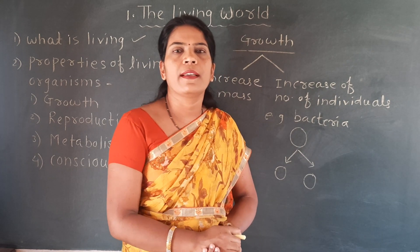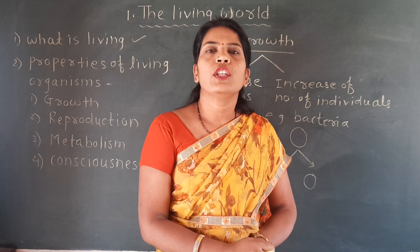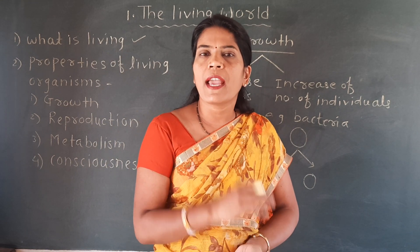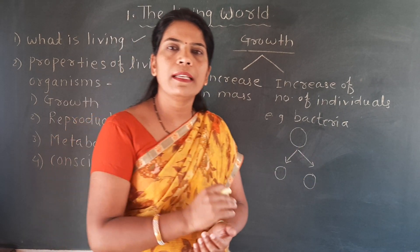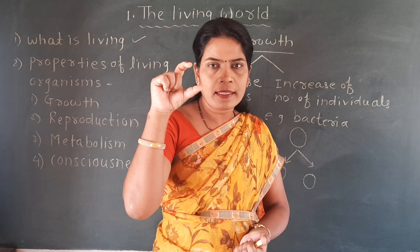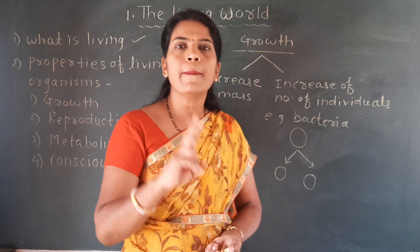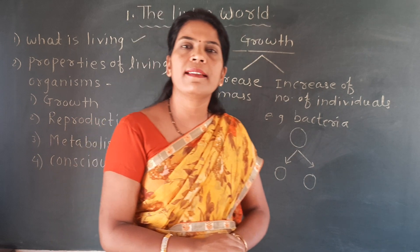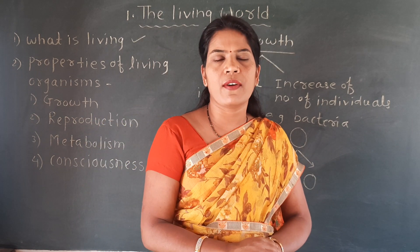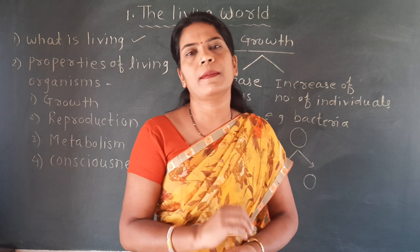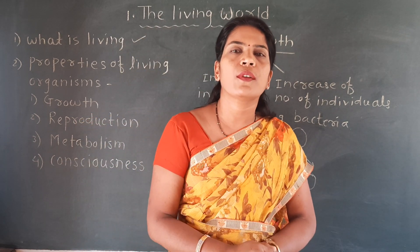This growth in all unicellular as well as multicellular organisms takes place by the process of cell division. Any single cell can divide into two cells, two cells again divide into four cells, four cells again divide into eight cells — this is called cell division. So in every living organism, whether unicellular or multicellular, growth takes place by the process of cell division.